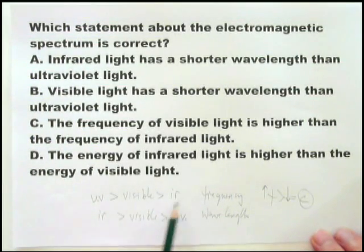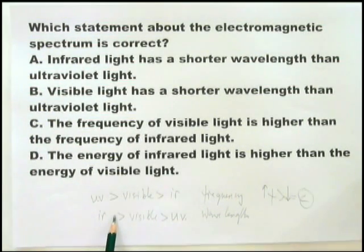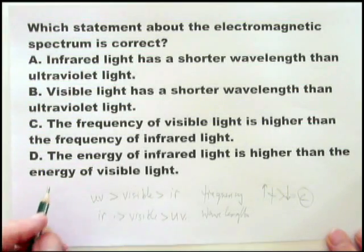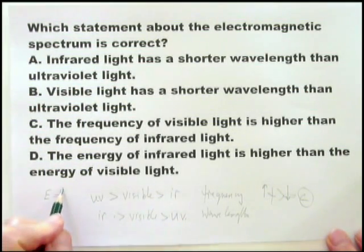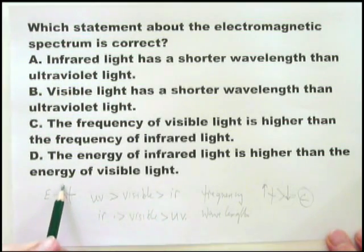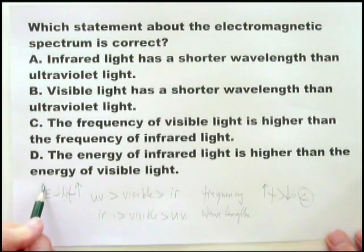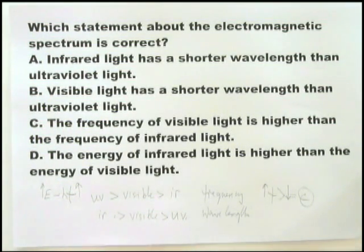Frequency and wavelength go in opposite directions. Any other thing you have to remember in this topic is that energy increases with increasing frequency, and that's E equals HF — H being Planck's constant, E is the energy, and F is the frequency. So as the frequency goes up, energy goes up. That's basically what you have to remember about the electromagnetic spectrum.